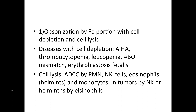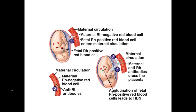Another condition is erythroblastosis fetalis. This usually occurs in the second or third pregnancy in which the fetus is RH positive while the mother is RH negative. The mother will form anti-D antibodies which will cross the placenta and bind to the fetal red blood cells, causing engulfment by the macrophages of the fetus, resulting in hemolytic anemia. If the fetus survives labor, it will be blood deficient and there is also suspicion of kernicterus due to hyperbilirubinemia.